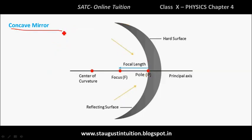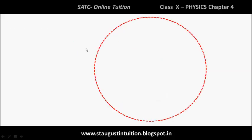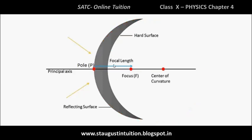The concave mirror is known by its cave-like inward shape, denoted as C. Next is the convex mirror, which has an outward bulging shape. The shading and labeling of the convex mirror distinguish it clearly from the concave mirror.